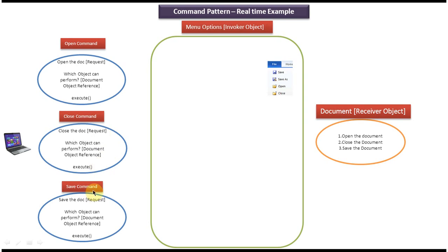The next one is the save command — it has the request to save the document. The document object is the receiver, and the execute method will call the document object's save method to save the document.